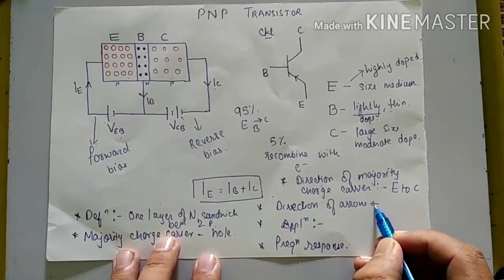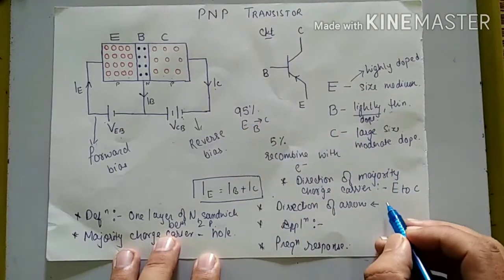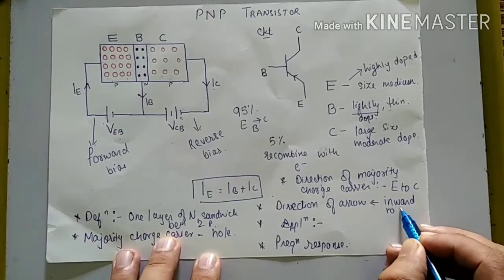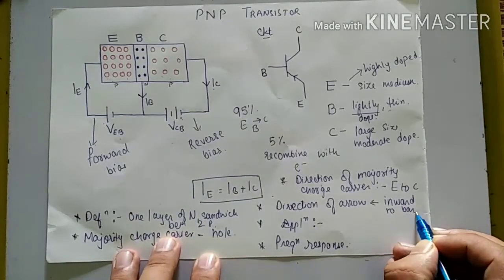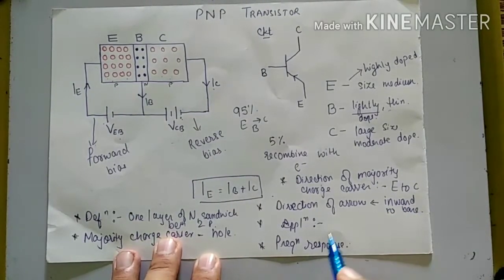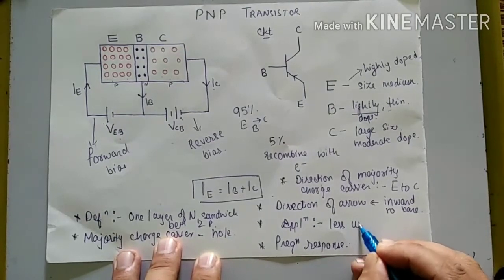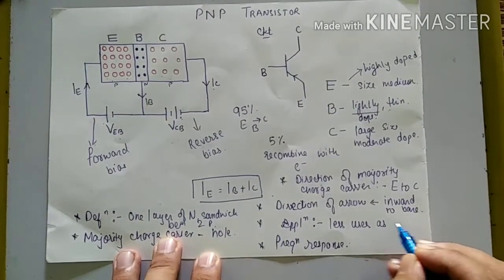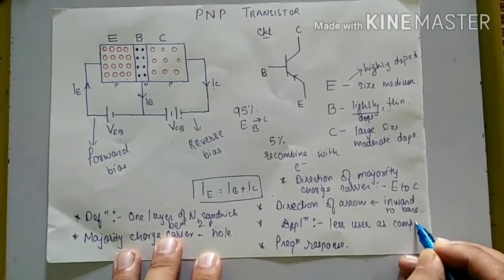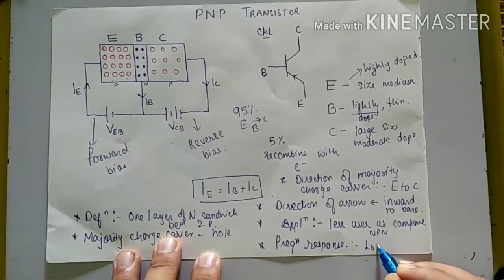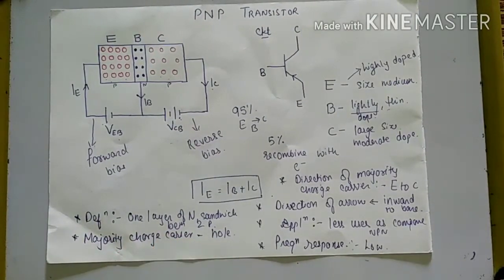The direction of the arrow in PNP transistor is inward, coming in toward the base. Regarding application and uses, PNP transistor cannot be used as much as compared to NPN transistor. And the frequency response of PNP is low as compared to NPN transistor. So this is the difference between PNP and NPN transistor.